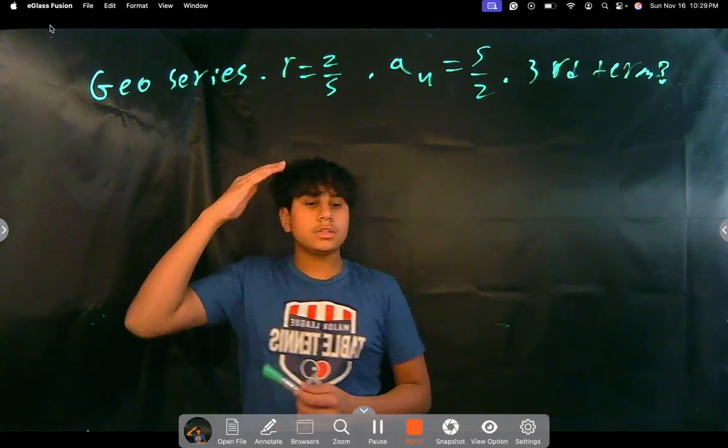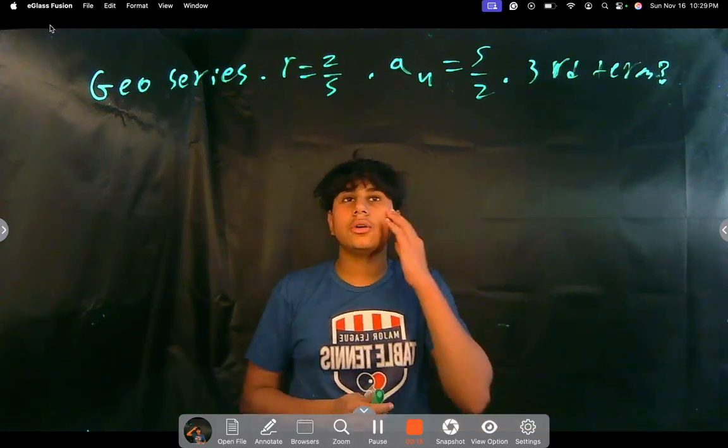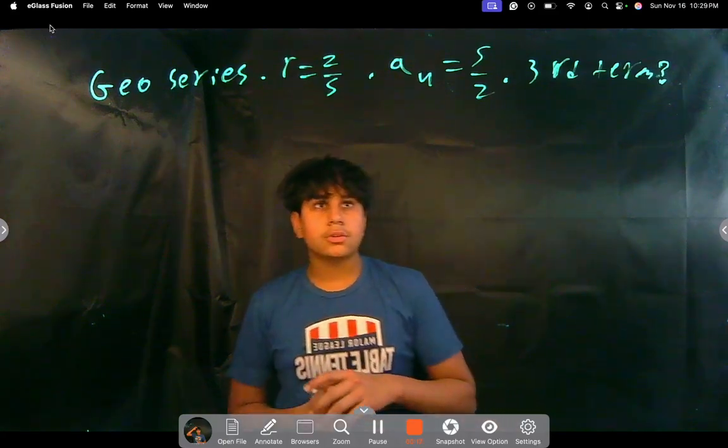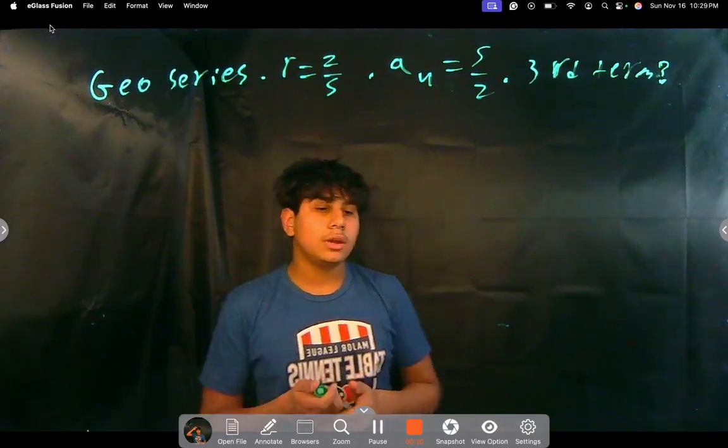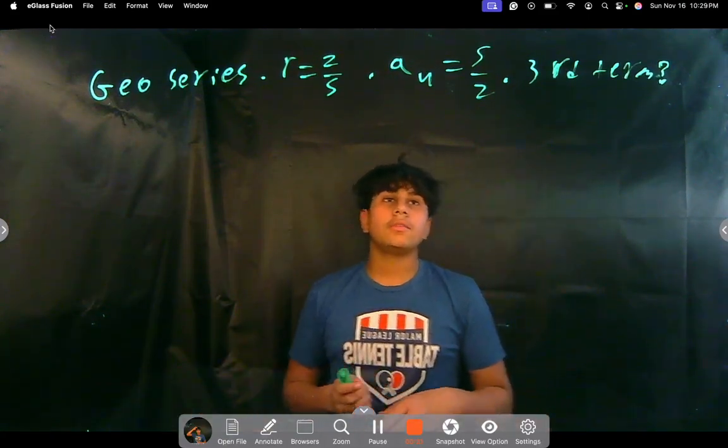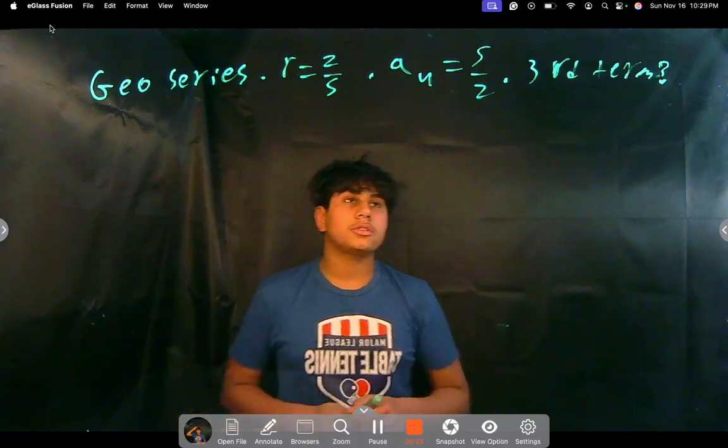So we're given a geometric series where r is 2 over 5, and the fourth term of the series, which is called a₄, is 5 over 2. So we're trying to find the third term.